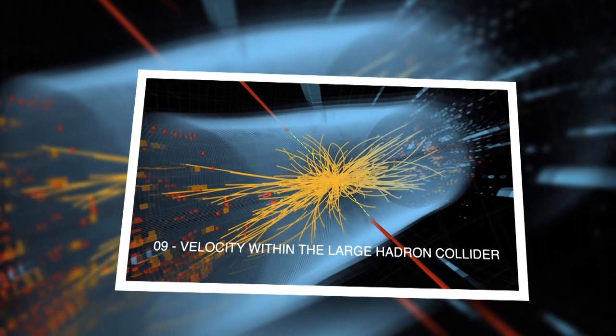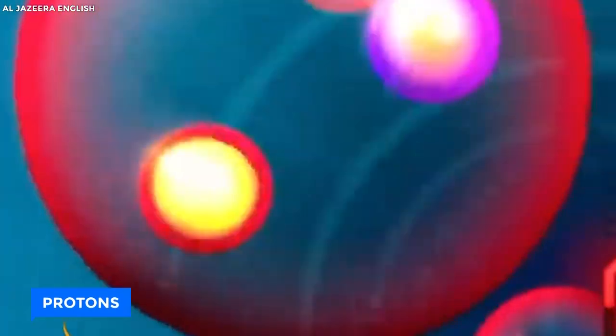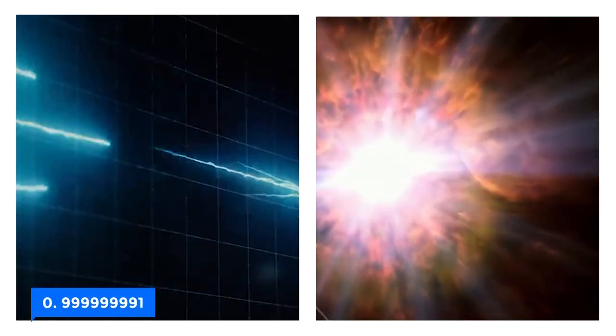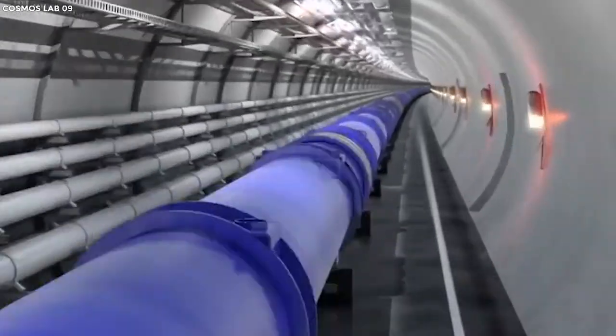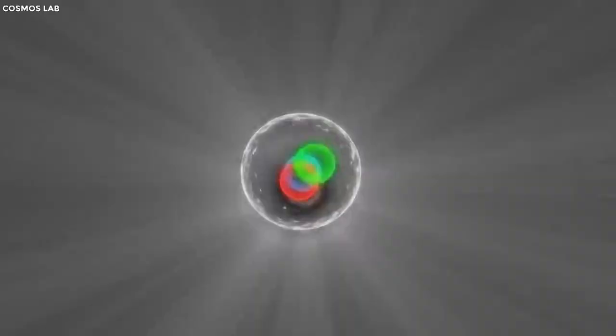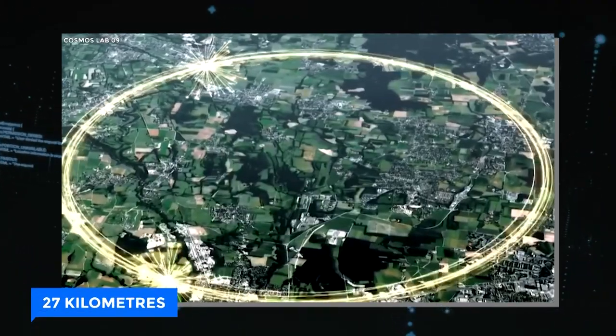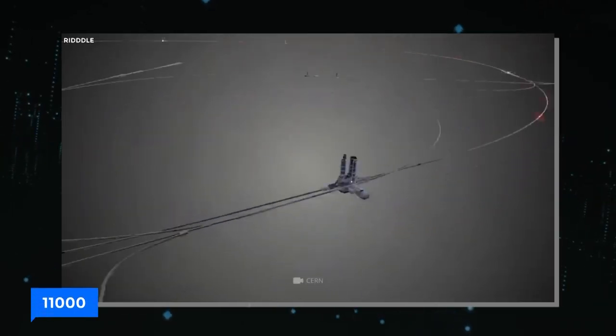Velocity Within the Large Hadron Collider. Within the confines, protons surge with an astonishing speed, clocking in at an astounding 0.999999991 times the velocity of light when the LHC hums at its design energy. Each proton embarks on a whirlwind journey, encircling the 27 km ring over 11,000 times every single second.